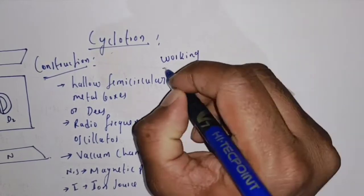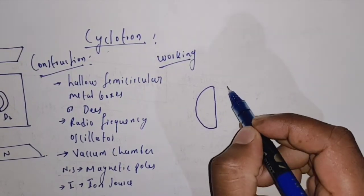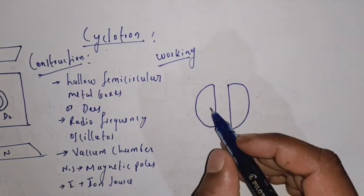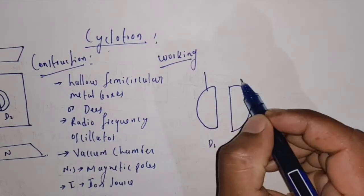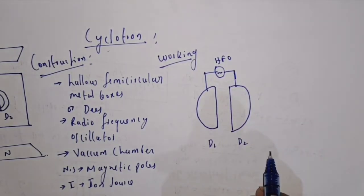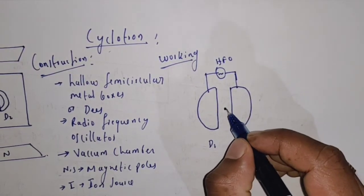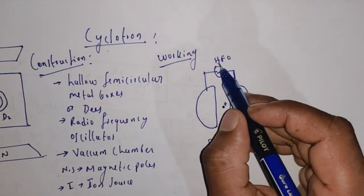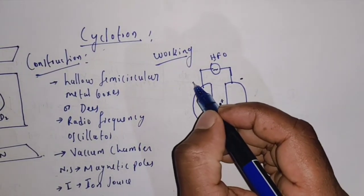Now let us see the working of the cyclotron. Here we have two hollow semicircular metal boxes D1 and D2, connected to the high frequency oscillator. The ion source is placed in between the two D's, and the ion source produces a positive charge.